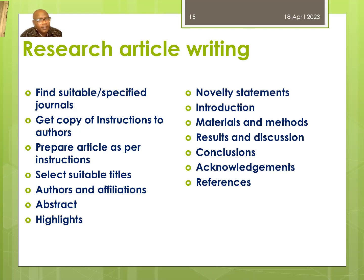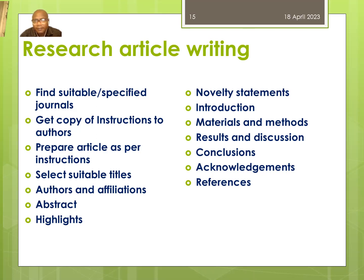You select a suitable, appealing, well-communicating, and very brief title. You involve the authors and attributions. The abstract is the summary of the research. Then you write the highlights, the statement, the introduction, the materials to be used, the results and discussions, conclusions, acknowledgement, and the references.